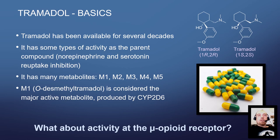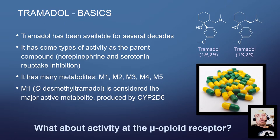Tramadol is given as a racemic mixture — that means two different stereoisomers. It's been available for many decades, at least 20 years, maybe more. However, it has some activity as the parent compound, as it's administered, but mostly that would be norepinephrine reuptake and serotonin reuptake. That's why it's kind of an interesting opioid — it has a stronger effect on those reuptake transporters than some of the other opioids. However, it has many metabolites.